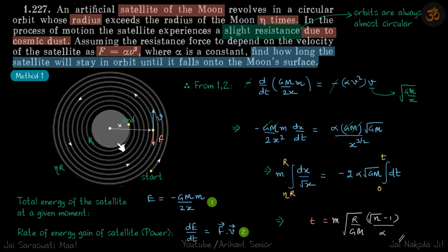This is the moon, and surrounding it there is some dust. A satellite traveling in a circular orbit starts to experience a resistive force alpha v-squared due to the dust. Because of this dust, its velocity will decrease, and its orbital radius will slowly decrease, causing it to follow a spiral path until it falls to the surface of the moon.